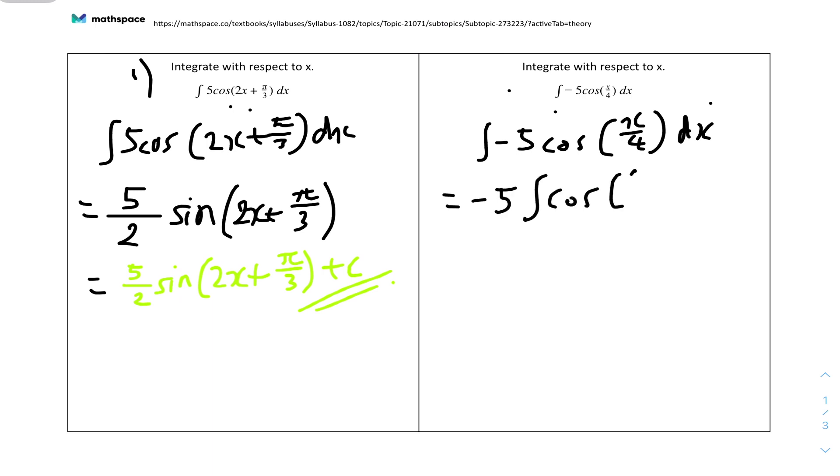We can basically just differentiate the bracket and do that value. You do the coefficient over that value. So differentiate pi x over 4, you'll get 1 over 4. So you do minus 5 which is the coefficient over 1 over 4 or over 0.25. That will get us minus 20.